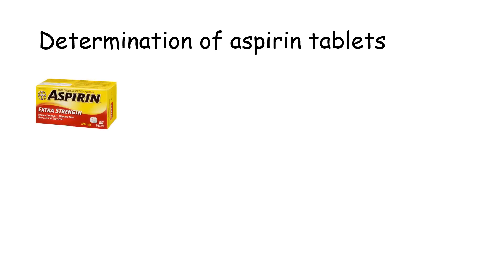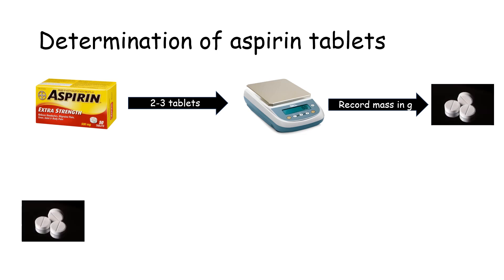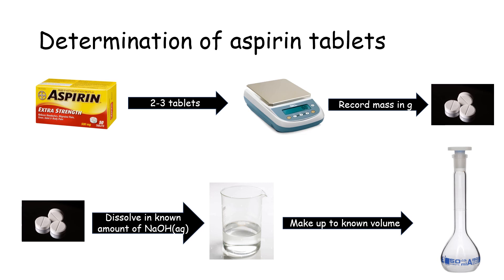So how would we go about determining how much aspirin is in a tablet? You take your aspirin off the shelf of the pharmacy — noting which brand you're using — and take two or three tablets, weigh them, and record the mass in grams. You then dissolve those tablets in a known amount of sodium hydroxide solution and make it up to a known volume using a volumetric flask, which is then ready to be titrated.